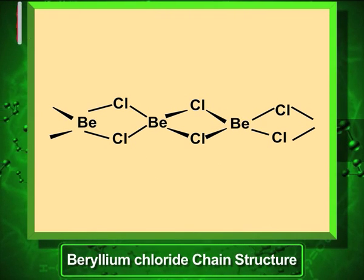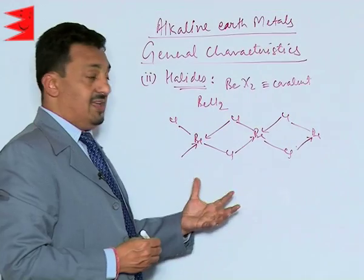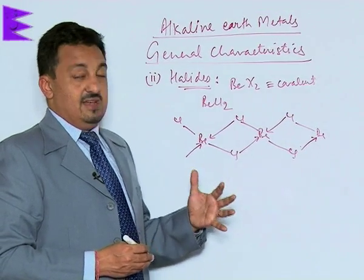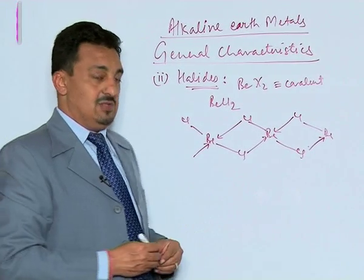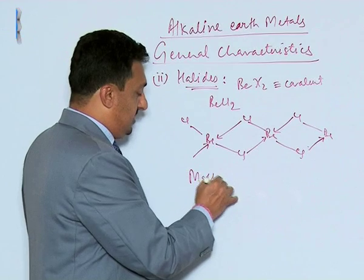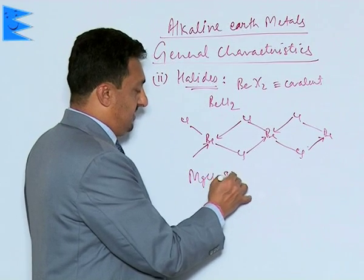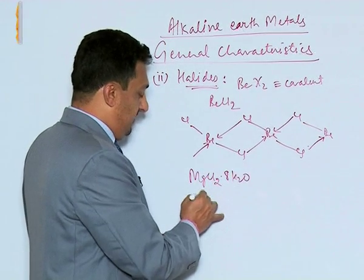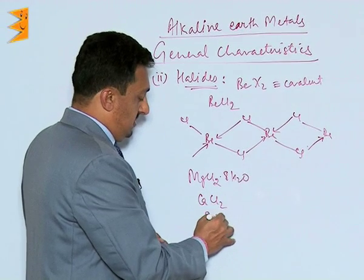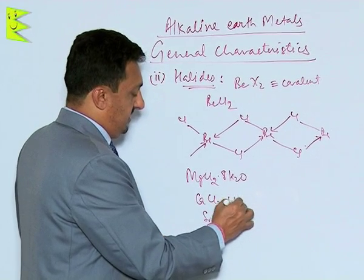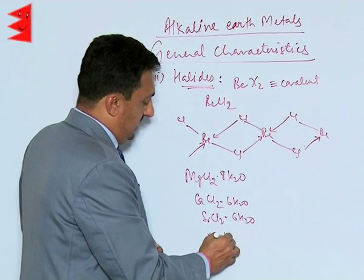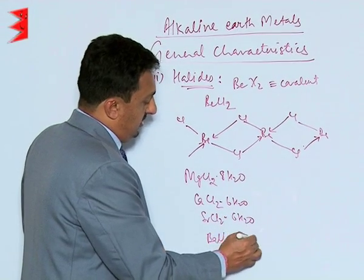Another interesting thing is that all these halides get hydrated easily, but their tendency to get hydrated decreases down the group. For example, MgCl₂ gets hydrated to 8 water molecules, whereas calcium and strontium chlorides get hydrated to 6 water molecules, and barium chloride gets hydrated to only 2 water molecules.